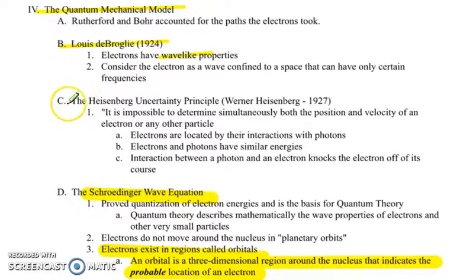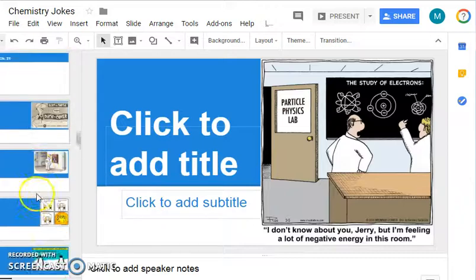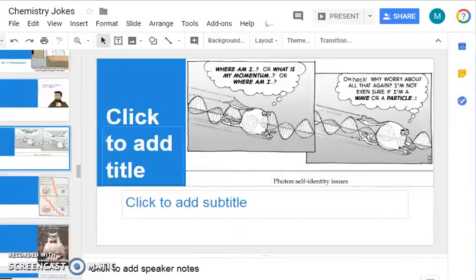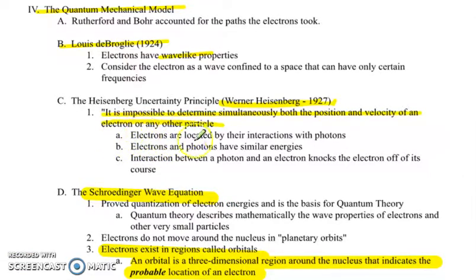The next scientist that came around and was looking at electrons was Heisenberg. Werner Heisenberg, he came up with his famous uncertainty principle in 1927. He said that it is impossible to determine simultaneously both the position and velocity of an electron or any other particle. I've got another chemistry joke for you. So are electrons having a self-identity crisis? And then he said electrons are located by their interactions with photons. So that's how we actually discover them in labs. But by doing that, we actually change the properties of the electrons because they are so similar in size and in energy. So those interactions between the photon and the electron knock the electron off its course. And that's why you can't figure out where it is and how fast it's moving at the same time. You can figure out one, but by measuring one, you change the other variable.